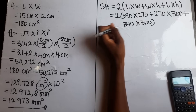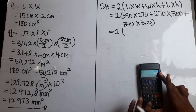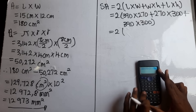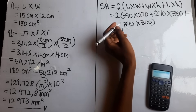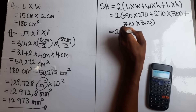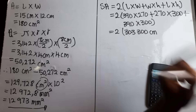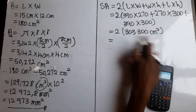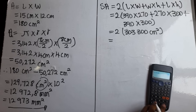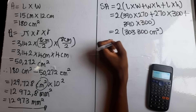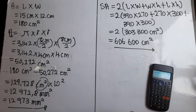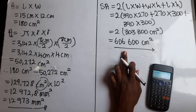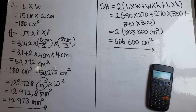Working through the brackets: 390 × 270, plus 270 × 300, plus 390 × 300. We then multiply the sum by 2. Clicking this on the calculator gives us 606,600 centimeters squared. This is our final answer — the amount of paper needed to wrap the gift box.